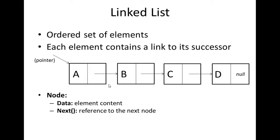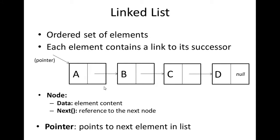A node consists of two things: data and a reference to the next node in the linked list. As you can see, every node is divided into two parts — this part contains a string value of A, and this part contains a reference to the next element, also referred to as 'next', which points to the next element.